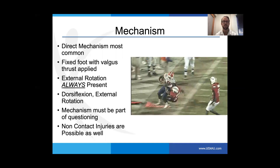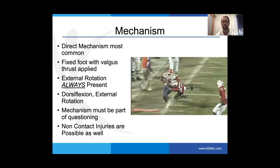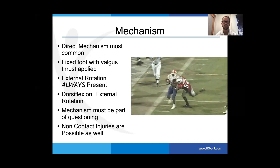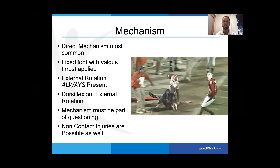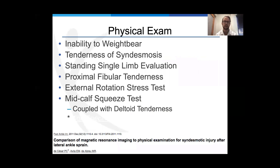The direct impact mechanism is really the most common — a fixed foot with a valgus thrust. This is very common, especially in football: the foot's planted, there's a rotation force, and always external rotation is present. When interviewing patients on the field or in the training room, the mechanism will often give away this injury. I ask: does the foot go in or does it go out? And sometimes we're lucky enough to have game film to evaluate.